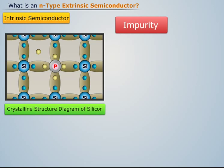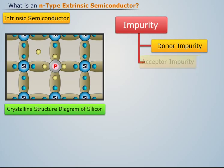Impurity can be of two types: donor impurity and acceptor impurity.